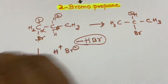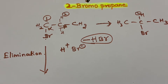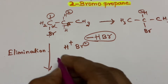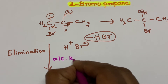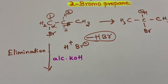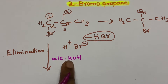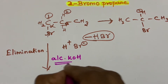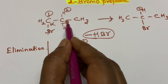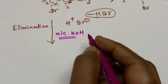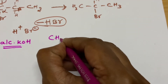This is your alpha carbon and this is your beta carbon. For elimination, what reagent will you use? You have to use alcoholic KOH or alcoholic NaOH. Please remember: if you use alcoholic KOH, elimination reaction will take place.